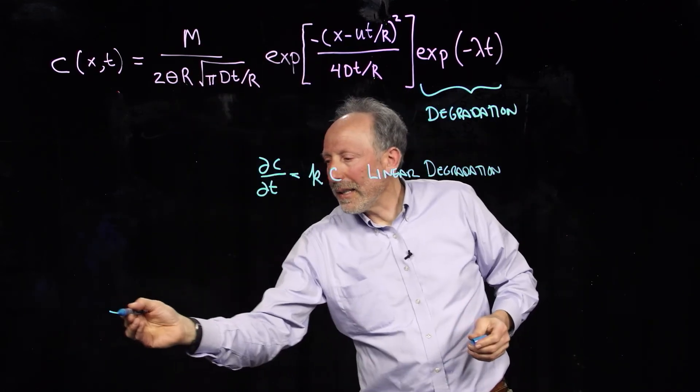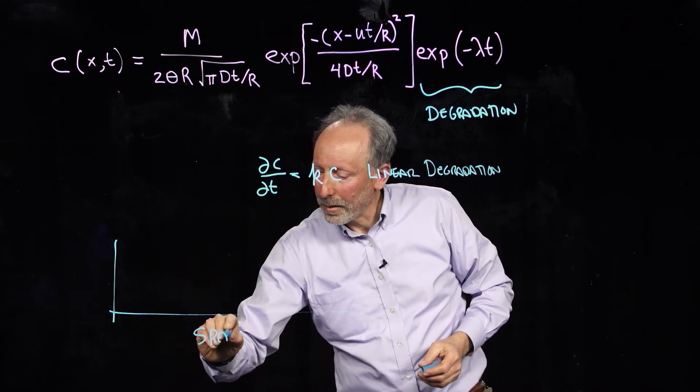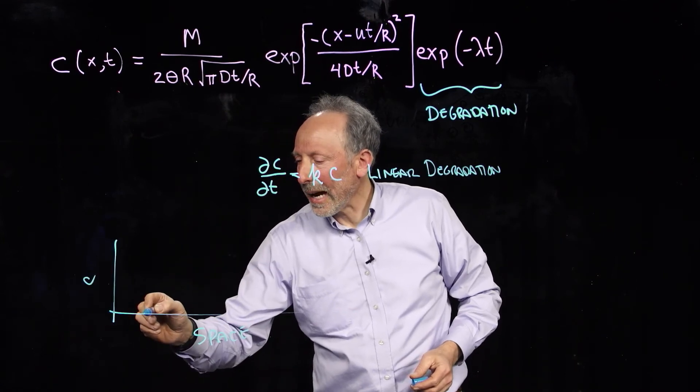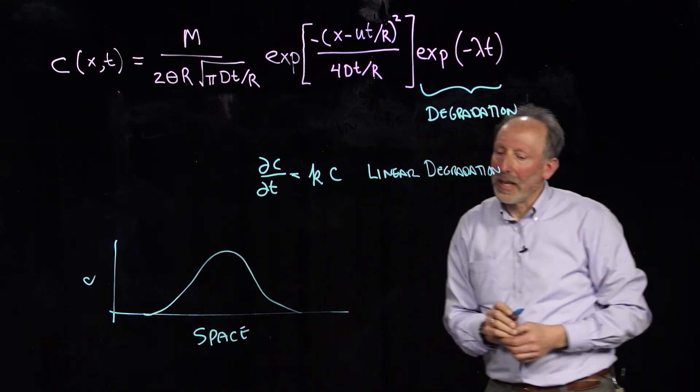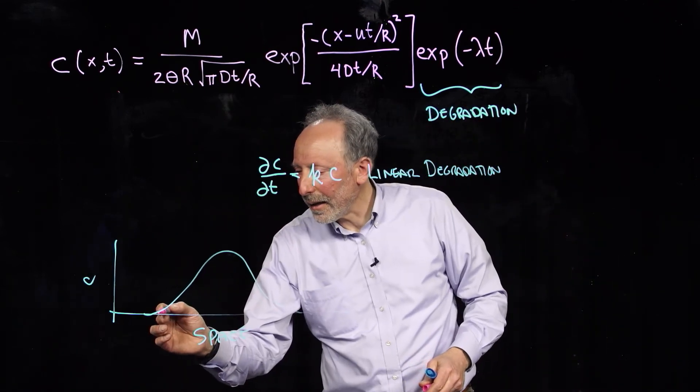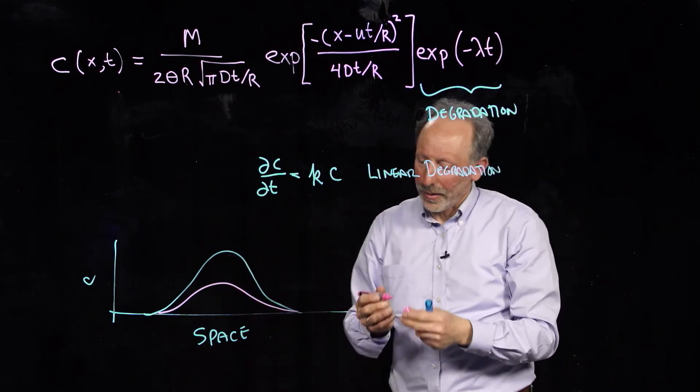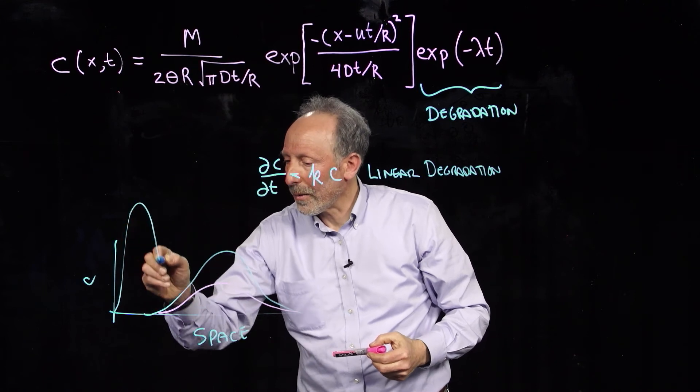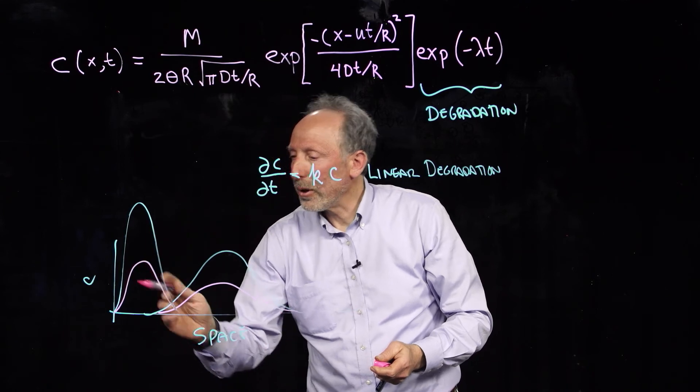Now, what that means is that the decay process doesn't change the geometry of the plume at all. So, basically, we'll draw space here. This is the plume moving along, and this will be concentration here. We'll take a snapshot, and let's suppose that that was our nice little Gaussian plume in space. If we had degradation, what it would say is that the degraded plume is just a linear multiplier of that concentration. At an earlier time, the concentration was quite a bit higher. And similarly, the degraded plume would be a constant multiplier.